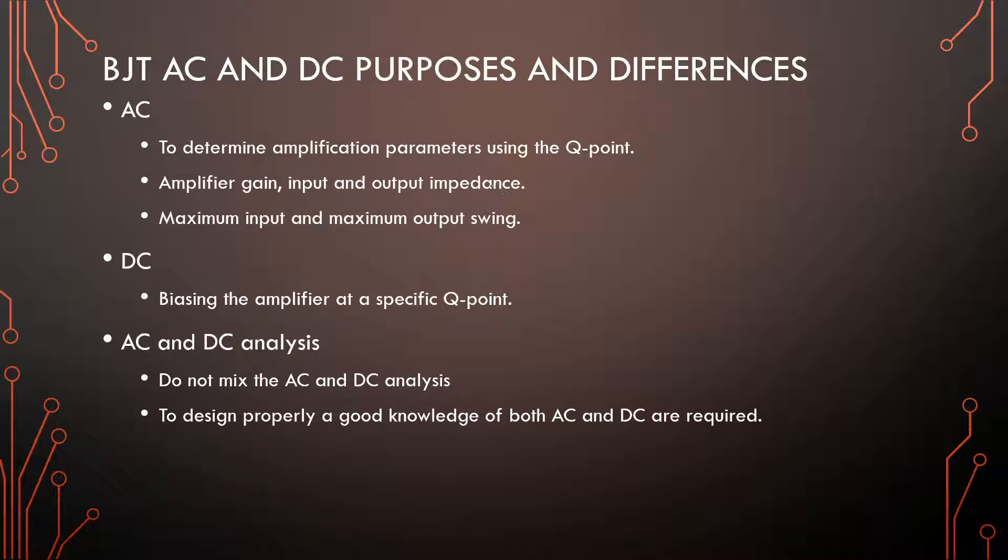The purpose of the AC analysis is to determine the parameters, the amplification parameters using the Q point. So a transistor will have a specific input and output impedance and amplification with a certain Q point. The Q point will also determine your amplifier's maximum output swing capabilities. So everything that moves, all the dynamic parts, is the AC analysis. DC is the more static thing.